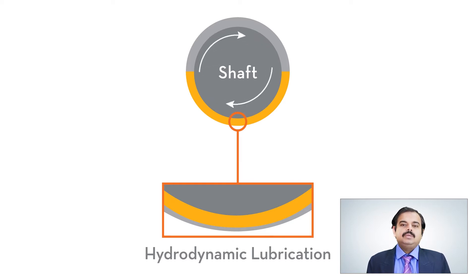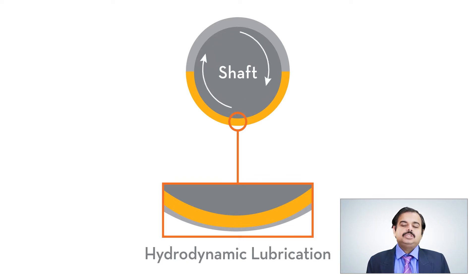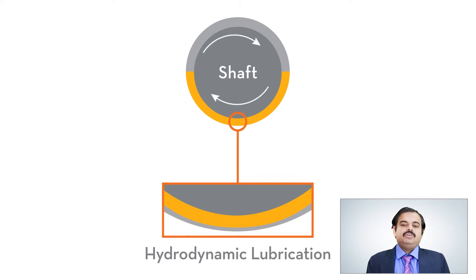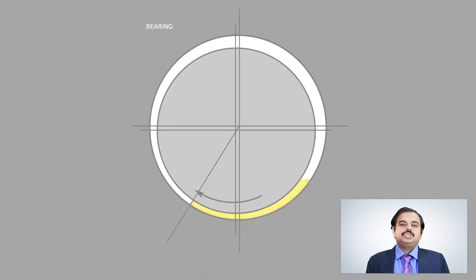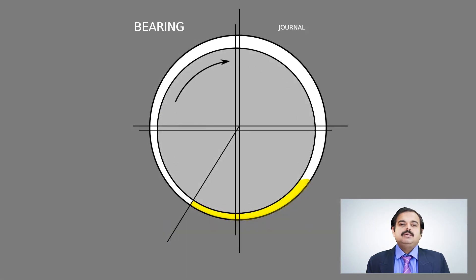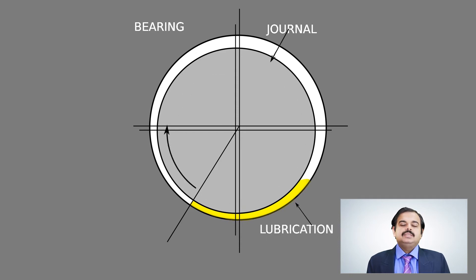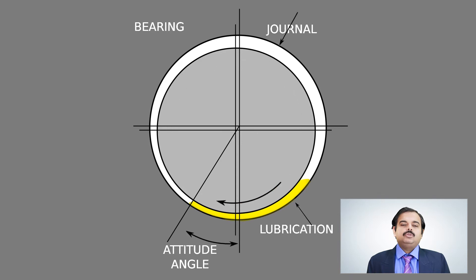During startup and shutdown, the auxiliary oil pump supplies the control oil. Once the turbine speed exceeds 2850 RPM, the main oil pump takes over. When the speed is attained, the wedge of oil created in the clearance between the shaft and the bearing builds up pressure which keeps the shaft floating. This condition of lubrication is called hydrodynamic lubrication.